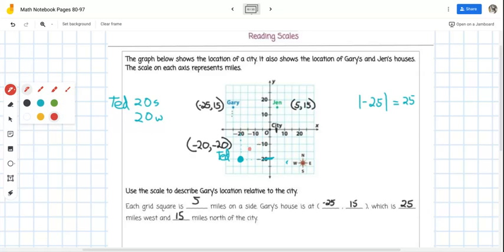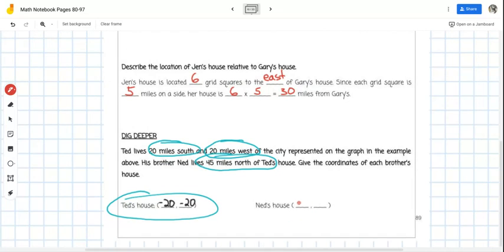So I'm going to use red. I'm going to count by fives. Five, ten, fifteen, twenty, twenty-five, thirty, thirty-five, forty, forty-five. This is where Ned's house is at. And the location there is negative 20 on the x-axis and 25 on the y-axis. So Ned is located at negative 20, 25. And I'm going to put that down for Ned's location of his house, negative 20, 25.